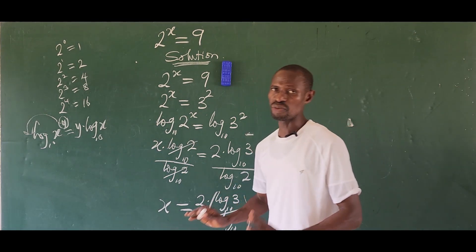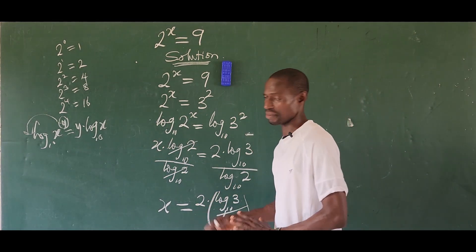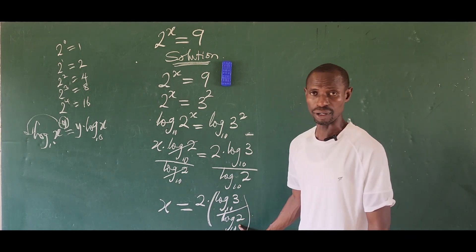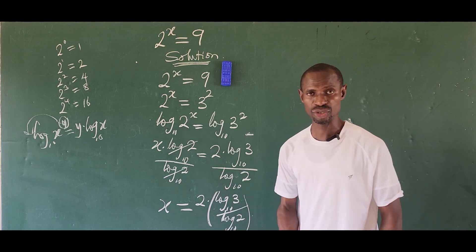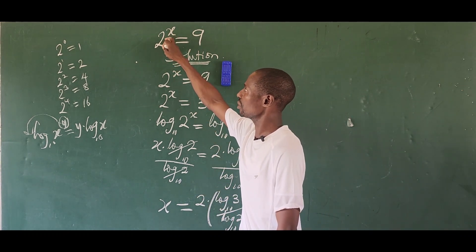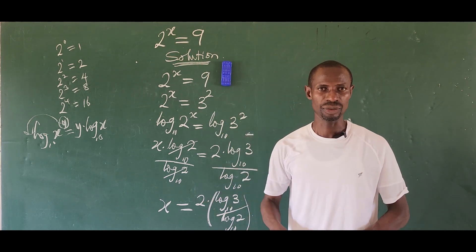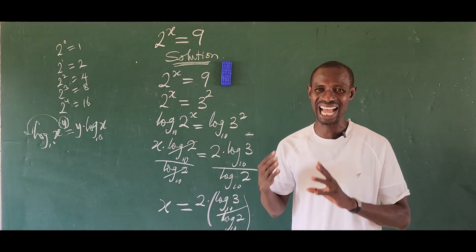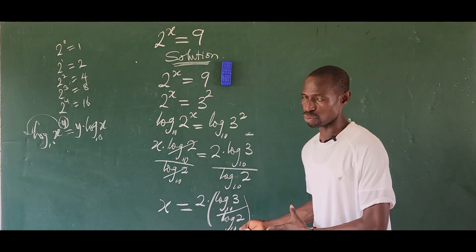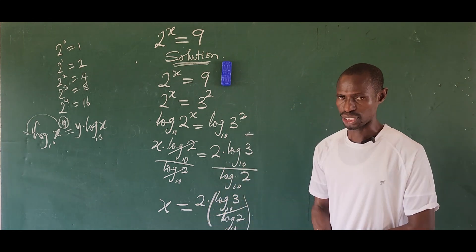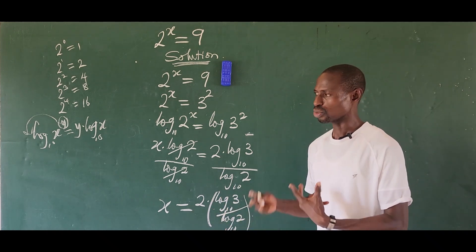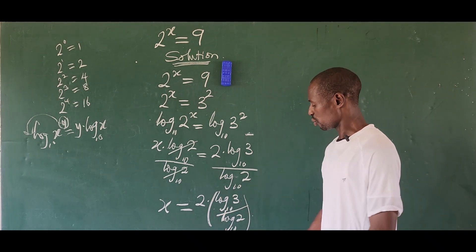We can get the numerical value of x from here — we find the value of log 3 and log 2, multiply by 2 and divide, and it gives us something around 3.17. If you put that in and simplify, it gives an approximate value. We will do a check on this, but first we want to rewrite the answer to make verification easier.